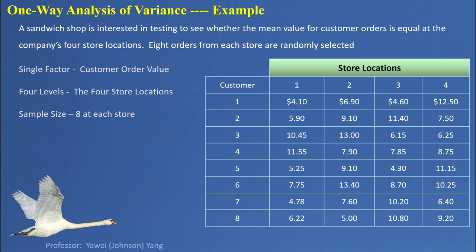This is a balanced design — we have the same sample size for each population. Here's our hypothesis: the null hypothesis assumes all locations have equal average customer order values. The alternative hypothesis means not all of them are equal. So this kind of question is about testing whether multiple population means are all equal, or whether one of the populations has an average value significantly different from the others.